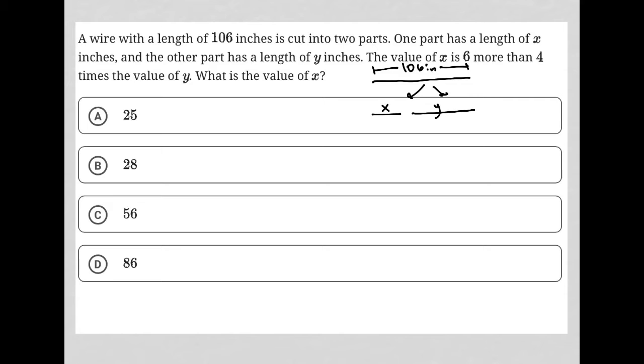Even though my drawing doesn't fit that, I can translate that sentence to mean X is six more than - 'is' always means equals. 'Six more than' means I'm adding six to something else. 'Four times the value of Y' becomes 4Y. So X equals 4Y plus 6. What is the value of X?